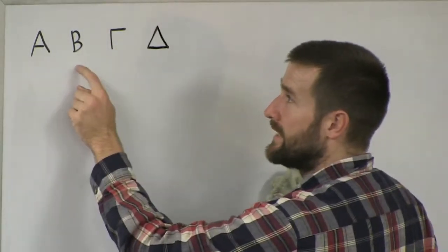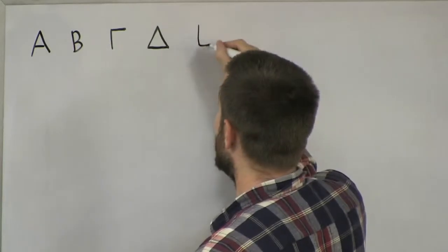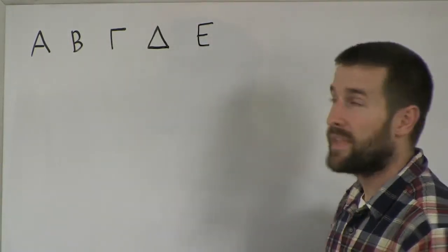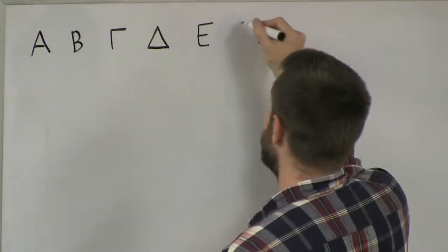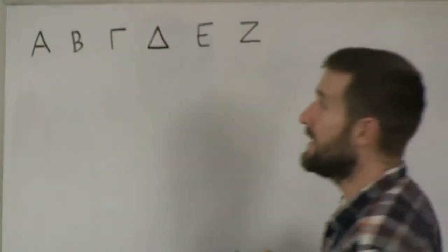So we've got Alpha, Vita, Gamma, Delta, Epsilon is just like our English capital E. Alpha, Vita, Gamma, Delta, Epsilon. Then we've got Zeta. Again, looks just like our English Z.